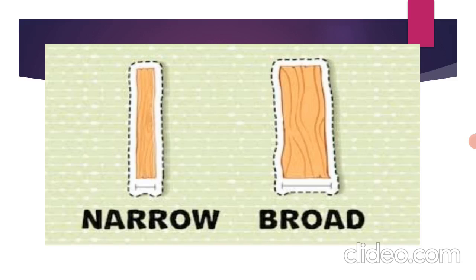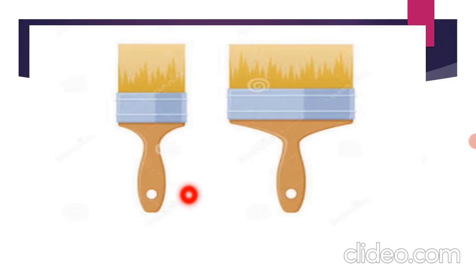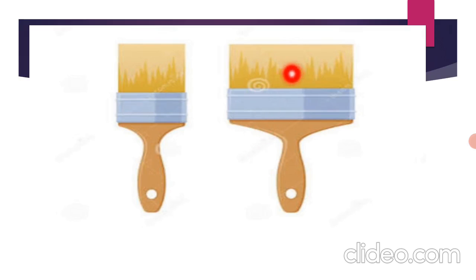I hope you all are getting it. Let me explain with one more example. As you can see, these are paint brushes. Come on, tell me — guess which one is narrow. Which brush is narrow? Yes, absolutely — this brush is narrow, which is small in size.